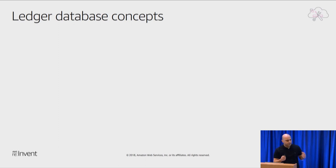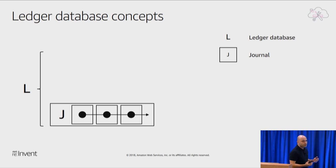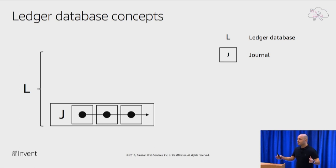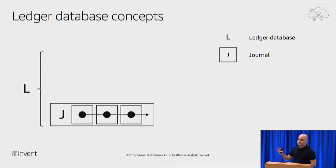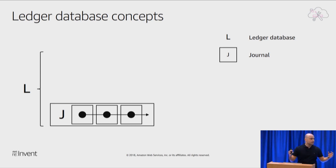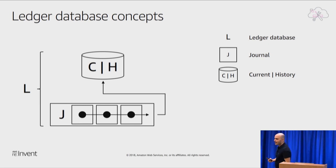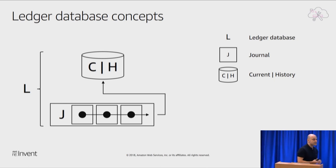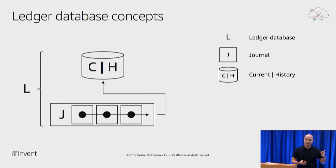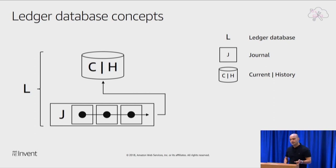At a high level, a ledger has two main concepts. The first is a journal — a complete history of every transaction block that occurred. The journal contains everything that ever took place on this database, and each one of those blocks is chained together with a cryptographic hash. In addition, there are two views: a current view showing the last version of the document, and a history view, similar to a statement summary, showing individual changes that occurred in a particular document.